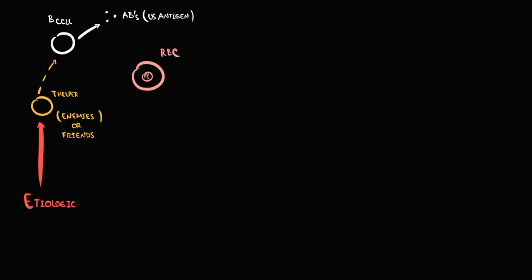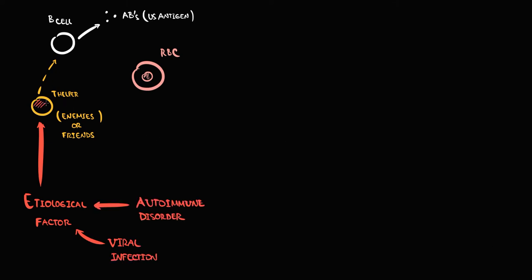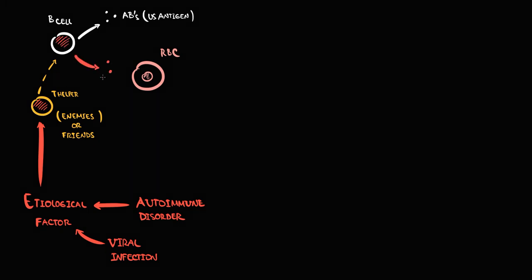However, some viral infection or autoimmune disorder can affect the function of T-cells. In this affected state, they sometimes cannot recognize which cells are friends and which cells are antigens. In this state, T-cells force B cells to produce immunoglobulin G antibodies against the body's own red blood cells. This condition is called immune break. Antibodies produced against one's own cells are called autoantibodies.